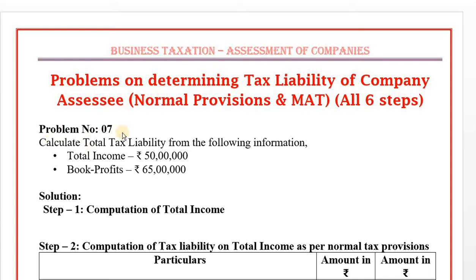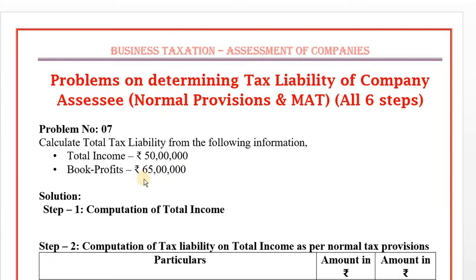Problem number 7: calculate total tax liability from the following information. Total income: 50 lakhs. Book profit: 65 lakhs. So step 1 and step 3 are given.